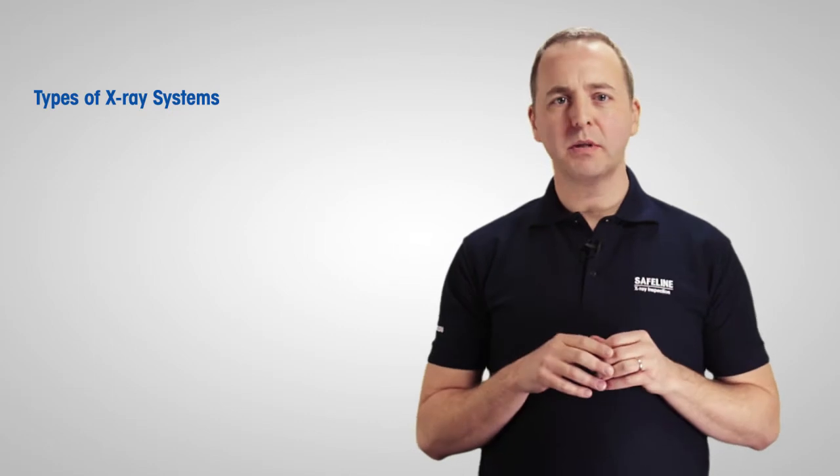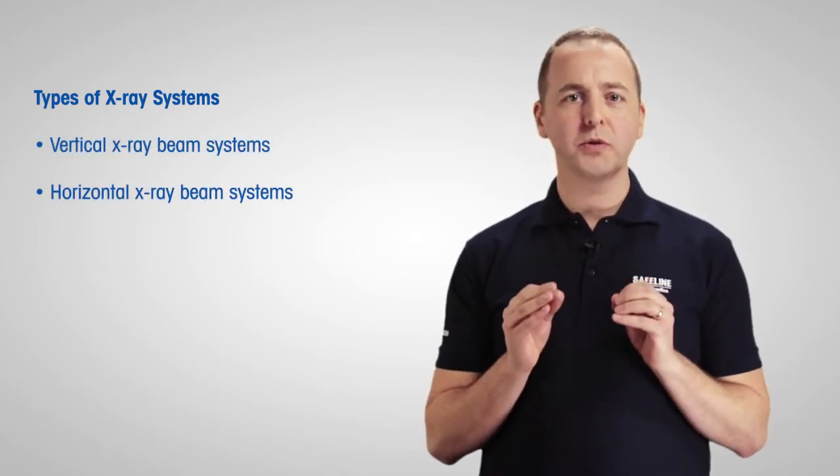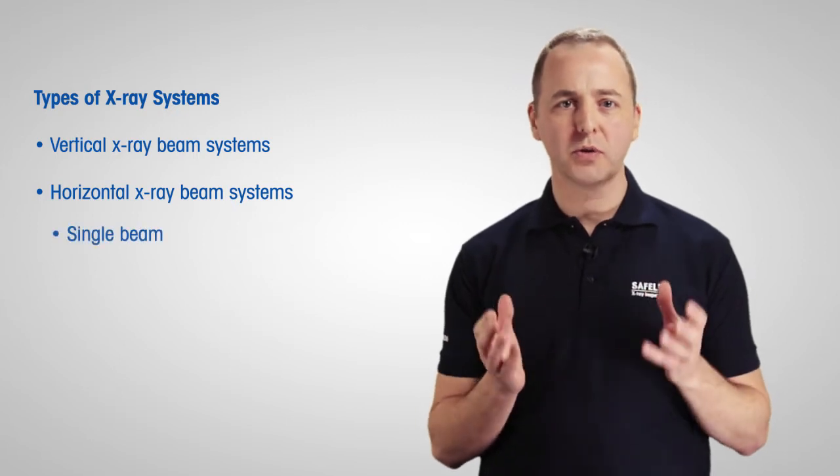There are two basic types of X-ray system, vertical and horizontal beam. Horizontal beams also offer the choice of single or split beam systems.